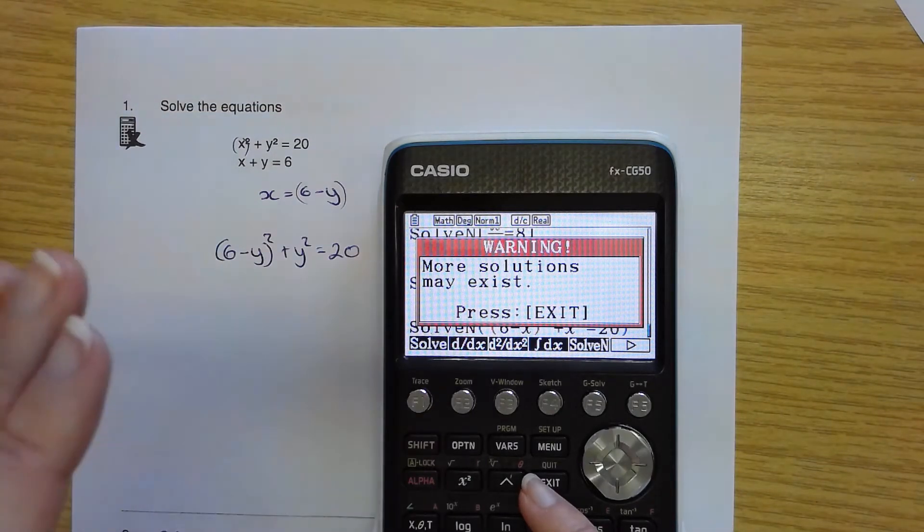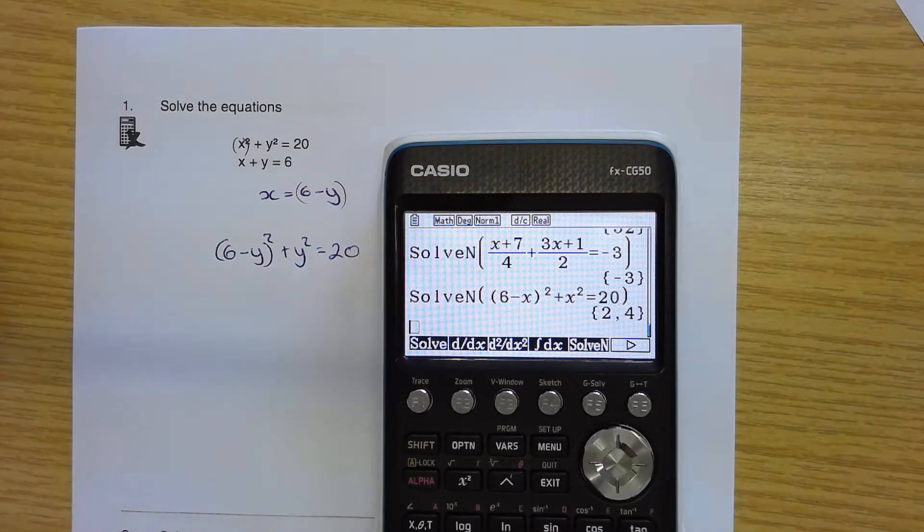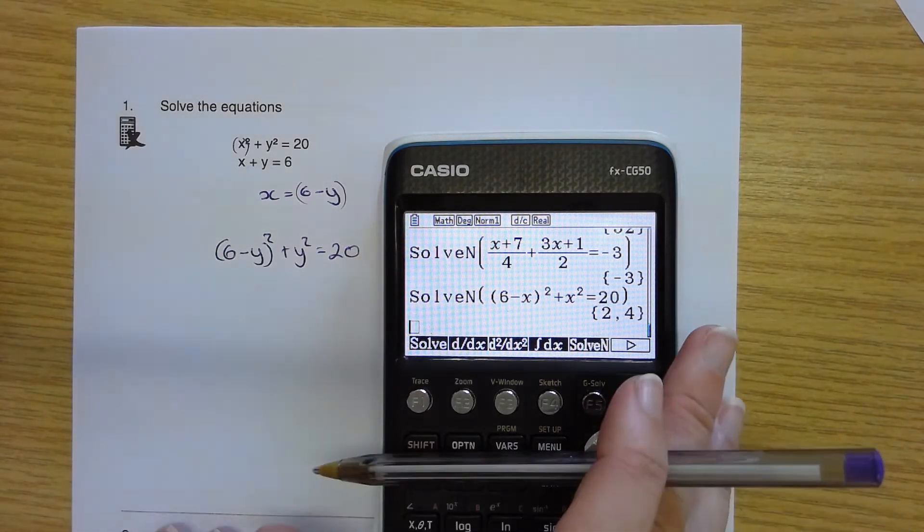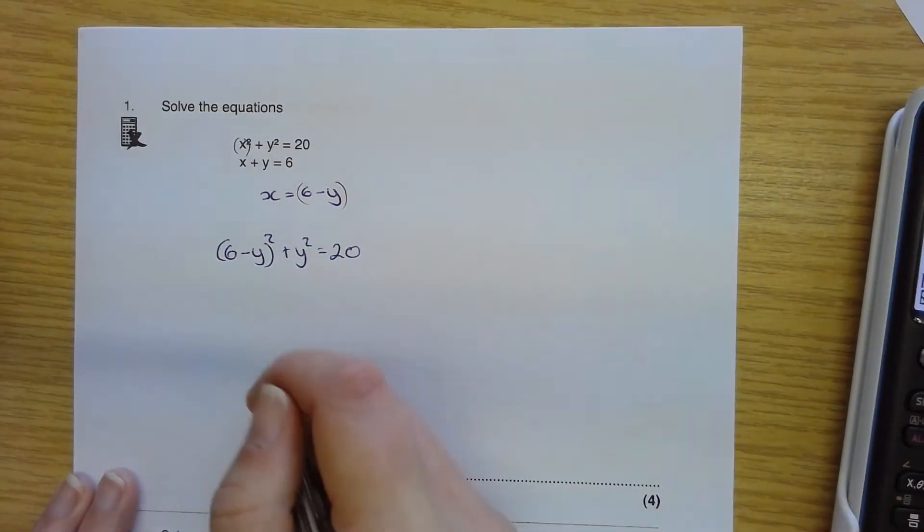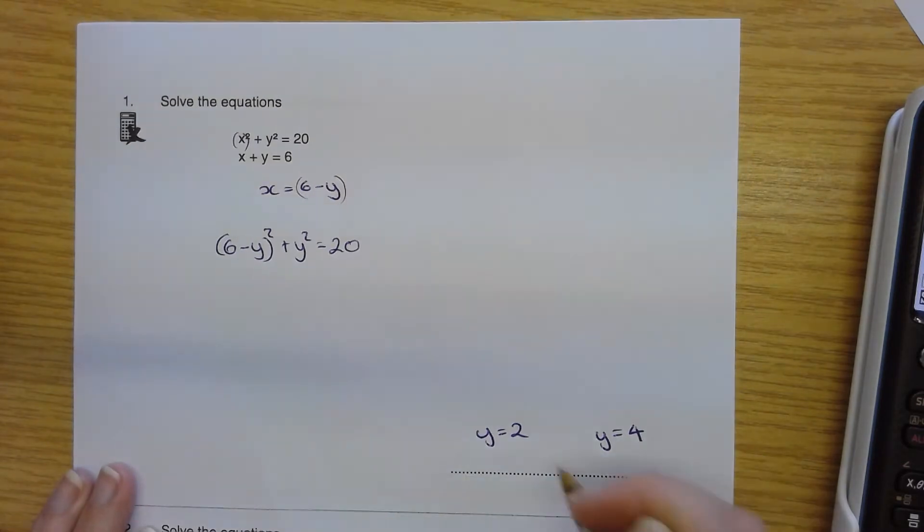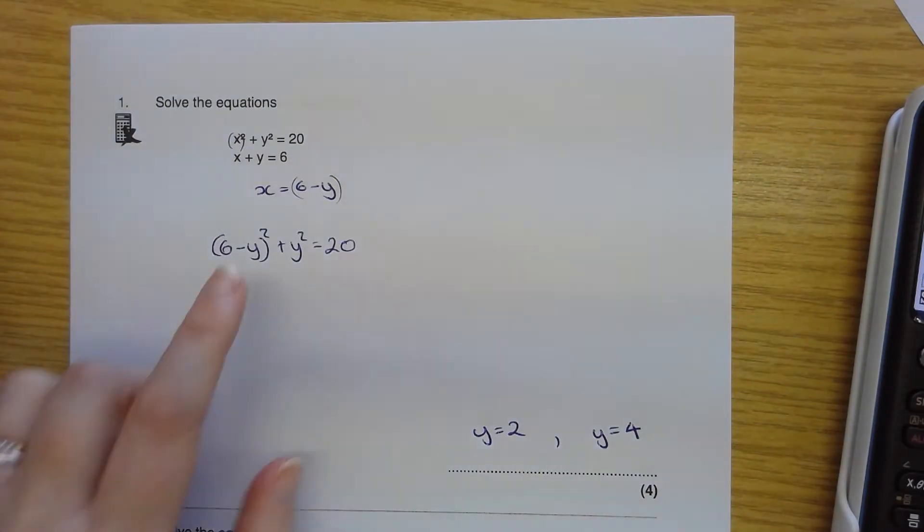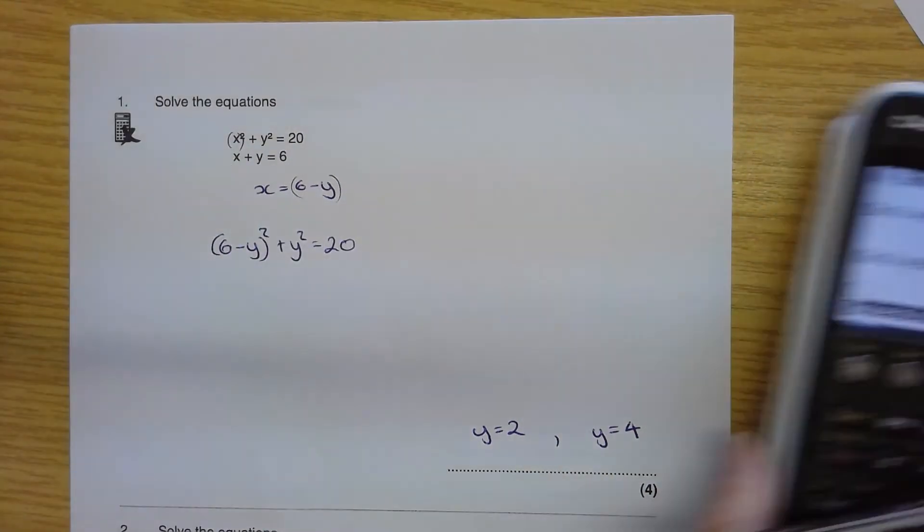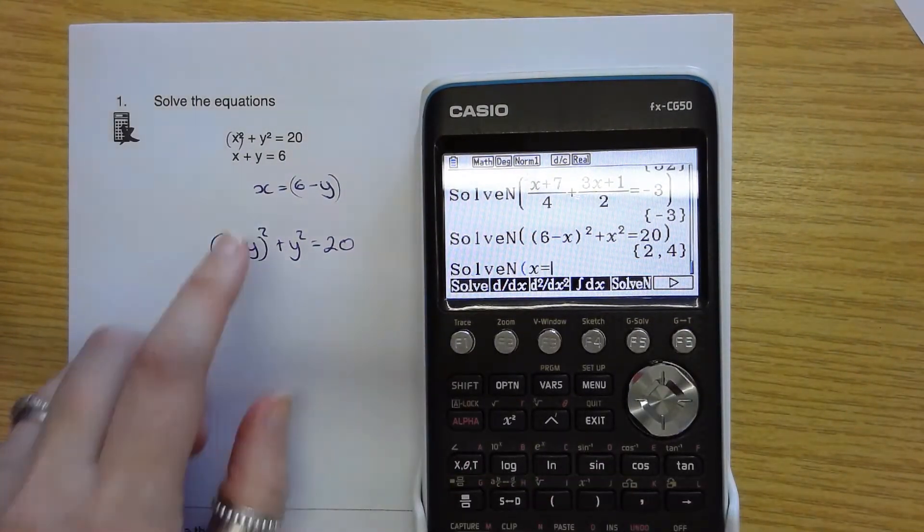Exit because I'm not interested in potential complex solutions or anything like that. And it tells me that my two values for y are both 2 and 4. So y could be 2, y could be 4. So I would have here as my two answers there. And we substitute those y values back into here to find the corresponding values of x.